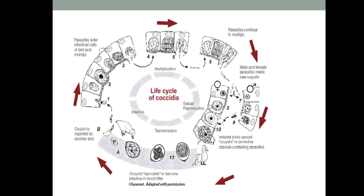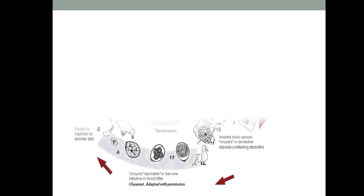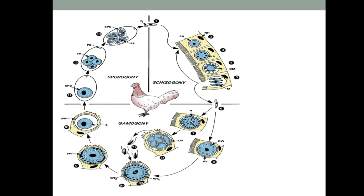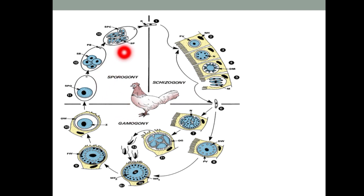In the gut of the chicken, merozoites form male and female gametocytes, which form the zygote, then the oocyst, which is released outside to infect new animals or birds. The diagram shows the different phases in the poultry animal: the first phase, the asexual phase, is schizogony; the second phase, the sexual phase, is gamogony; and there is again an asexual phase which is sporogony. Schizogony and gamogony take place inside the gut of the chicken, while sporogony takes place in the external environment.